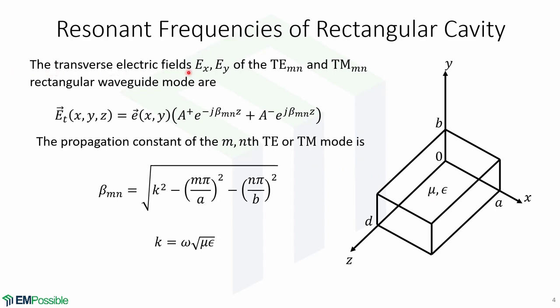The transverse electric fields Ex and Ey of the TEmn and TMmn of the rectangular waveguide mode are given by this expression, where little e is the transverse variation of the mode, and A plus and A minus are arbitrary amplitudes for the forward and backward traveling waves. The propagation constant of the m and nth TE or TMmn mode is given by βmn equals k squared minus mπ/a squared minus nπ/b squared, where k is the wave number given by ω√(με).